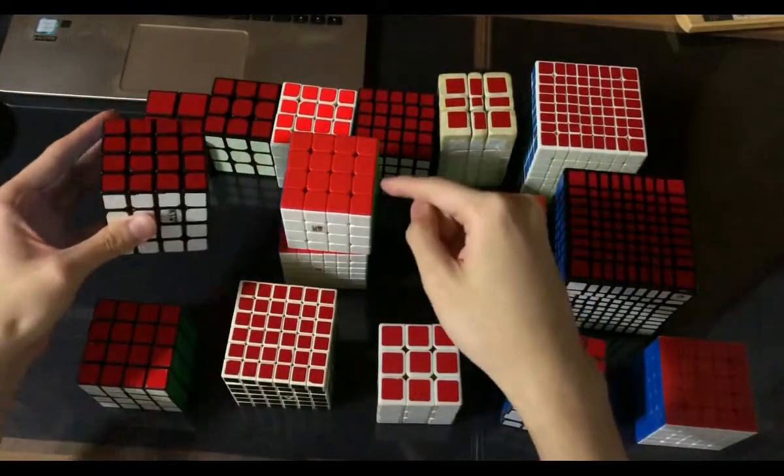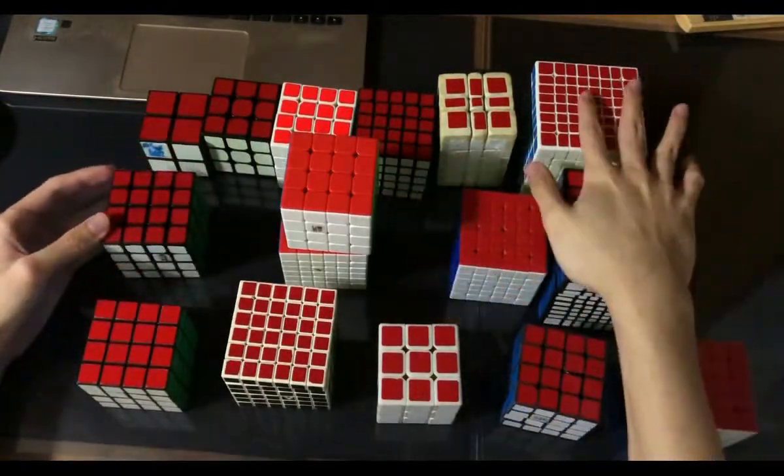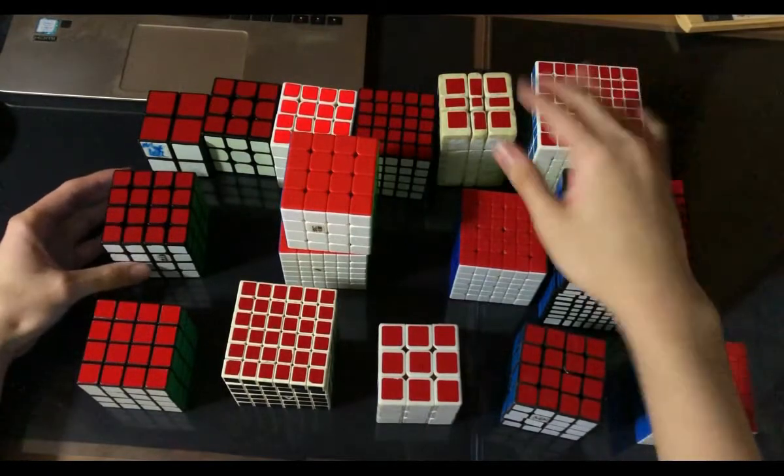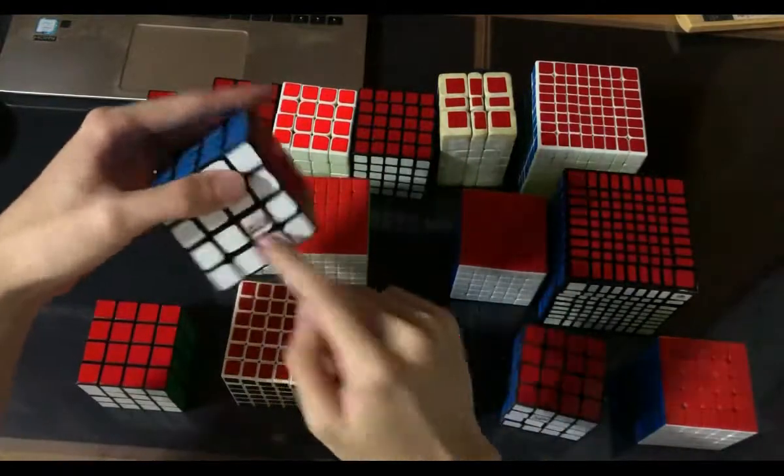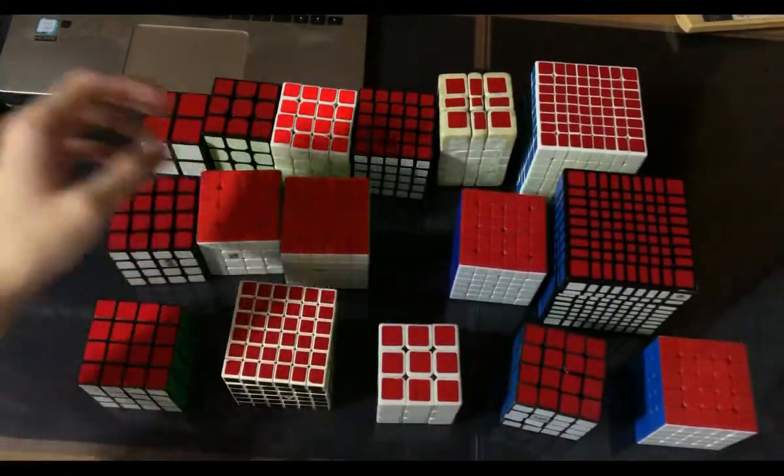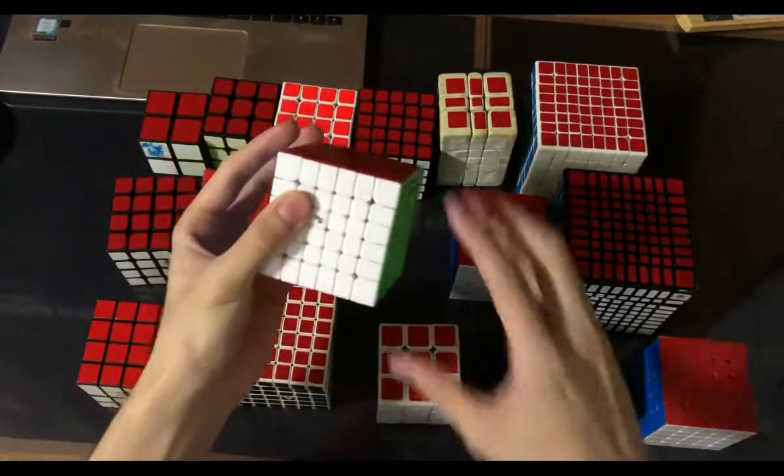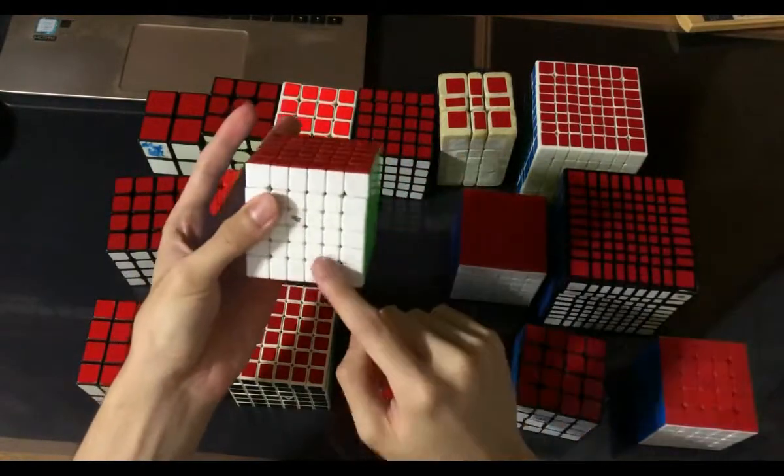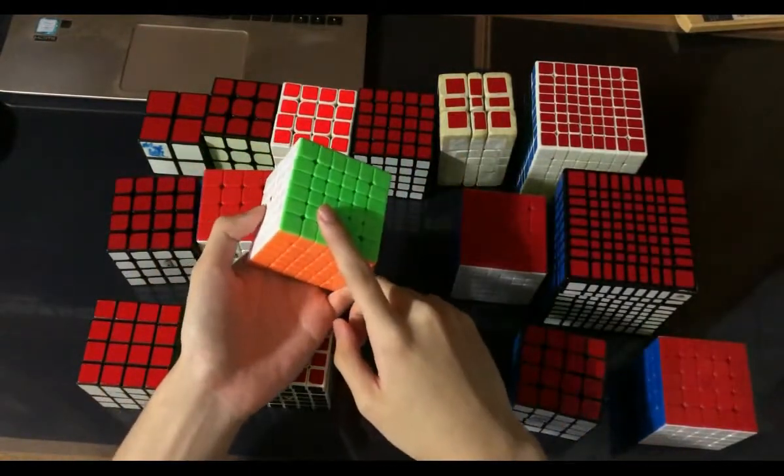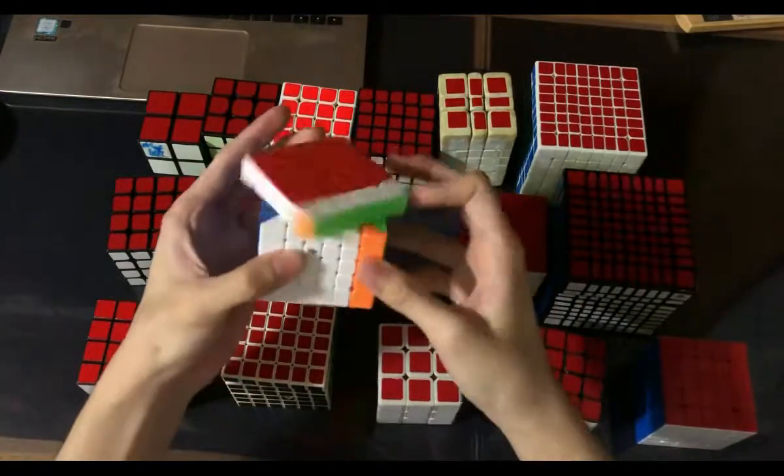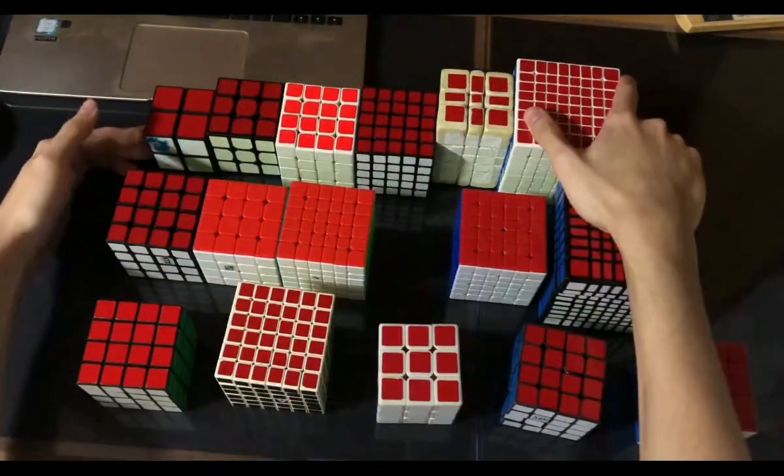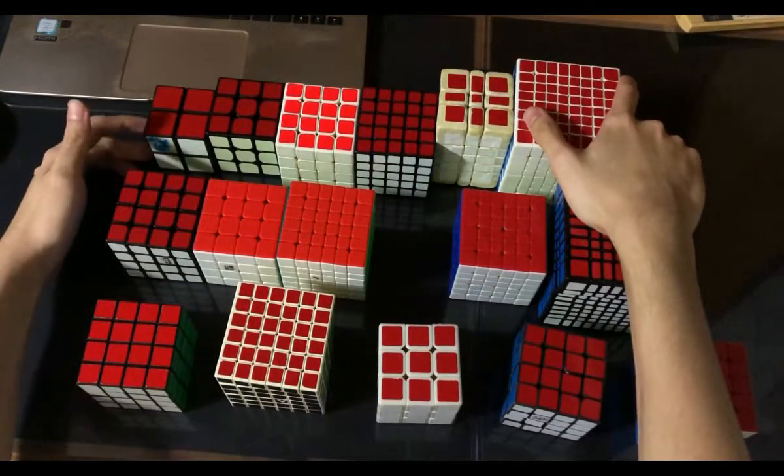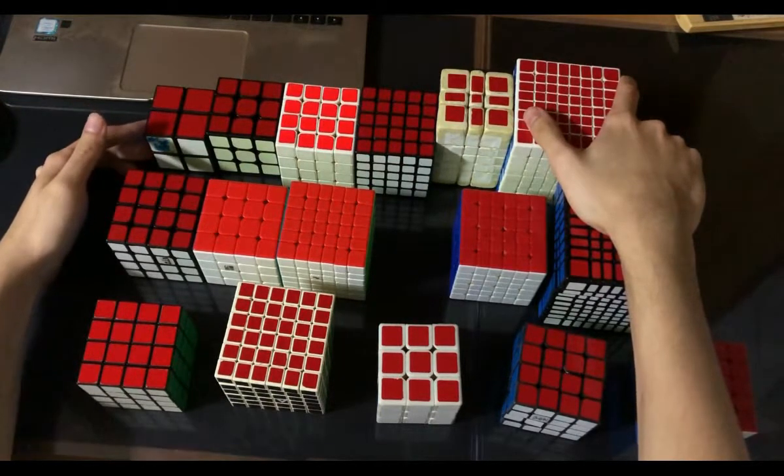MGC6, this one is currently contesting with my Aochuang GTS for the position of 6x6 main, but it hasn't fully taken over yet. I still feel I can use either cube. The reason why Sheng Shou has so many compared to the rest is because it has just been around longer. Generally most of these cubes are older stuff.